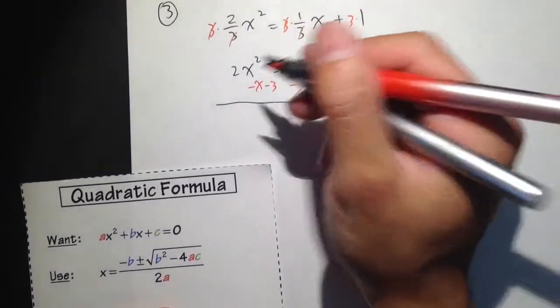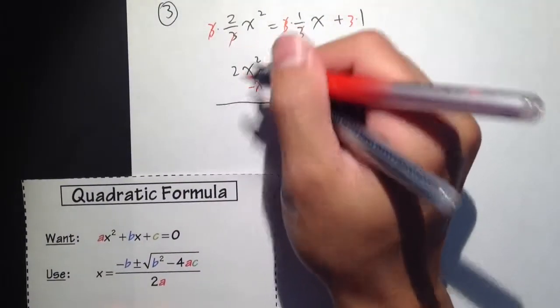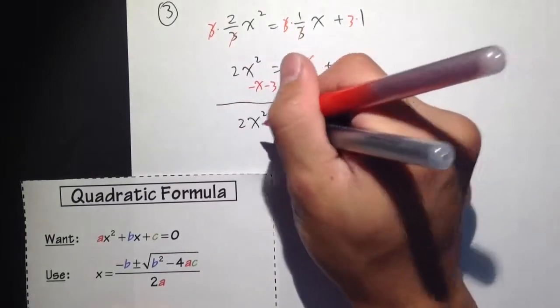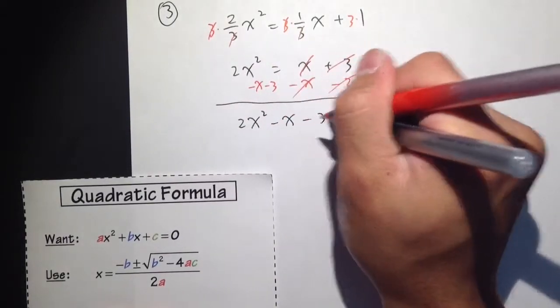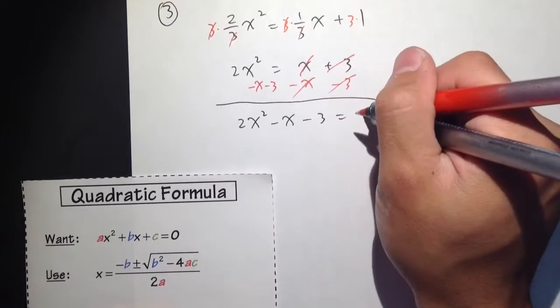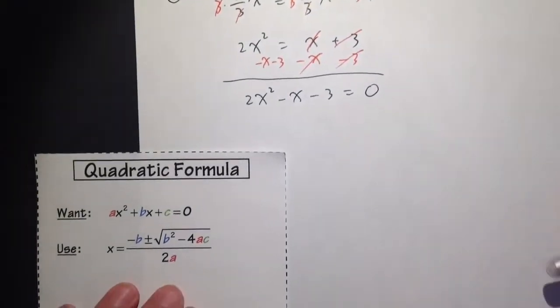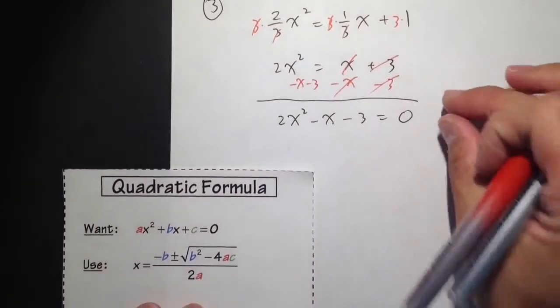Put things in order. The one with the x squared goes first, which is the 2x squared, and then minus x minus 3. On this side, it's equal to 0. So we did it. We got what we need, the standard form and the other side is equal to 0.